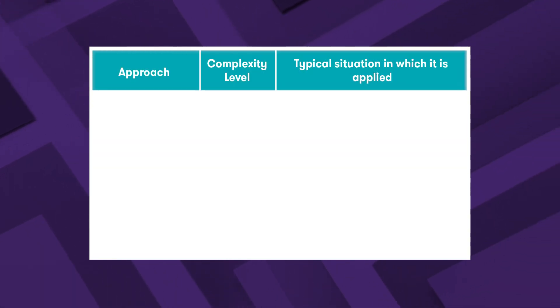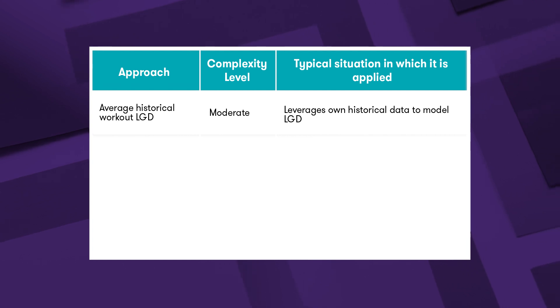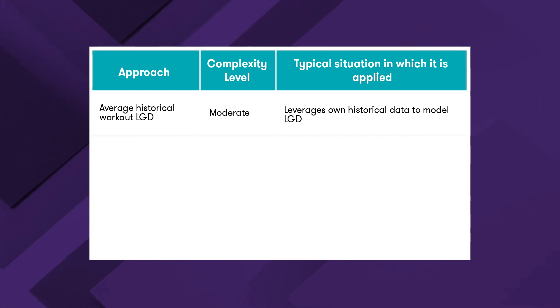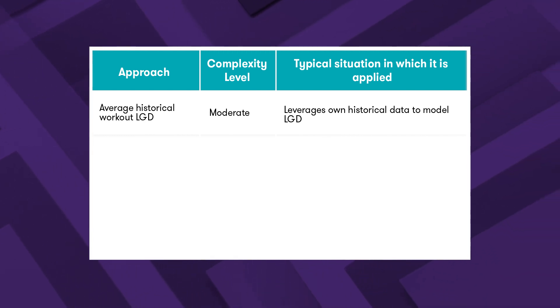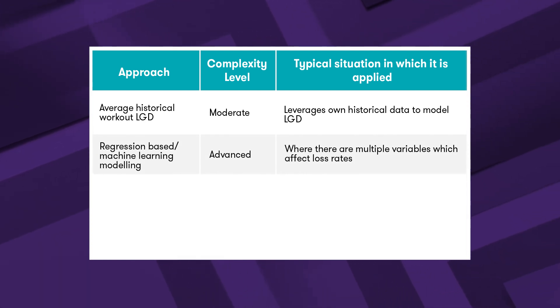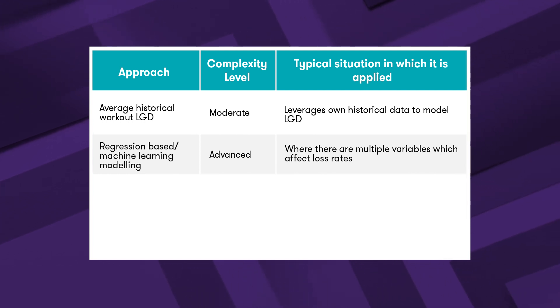Talking about LGD now — how do we estimate how much we lose on a loan which defaults? The first consideration is generally how much we have lost on loans that defaulted in the past. For entities with historical data, a discounted cash flow approach using historical recovery amounts can be used to determine the workout LGD. However, it may often be useful to use regression or machine learning LGD models, which can be trained to identify which variables impact recovery rates and are therefore more responsive to variations in loan type, collateral nature, and changing economic circumstances.